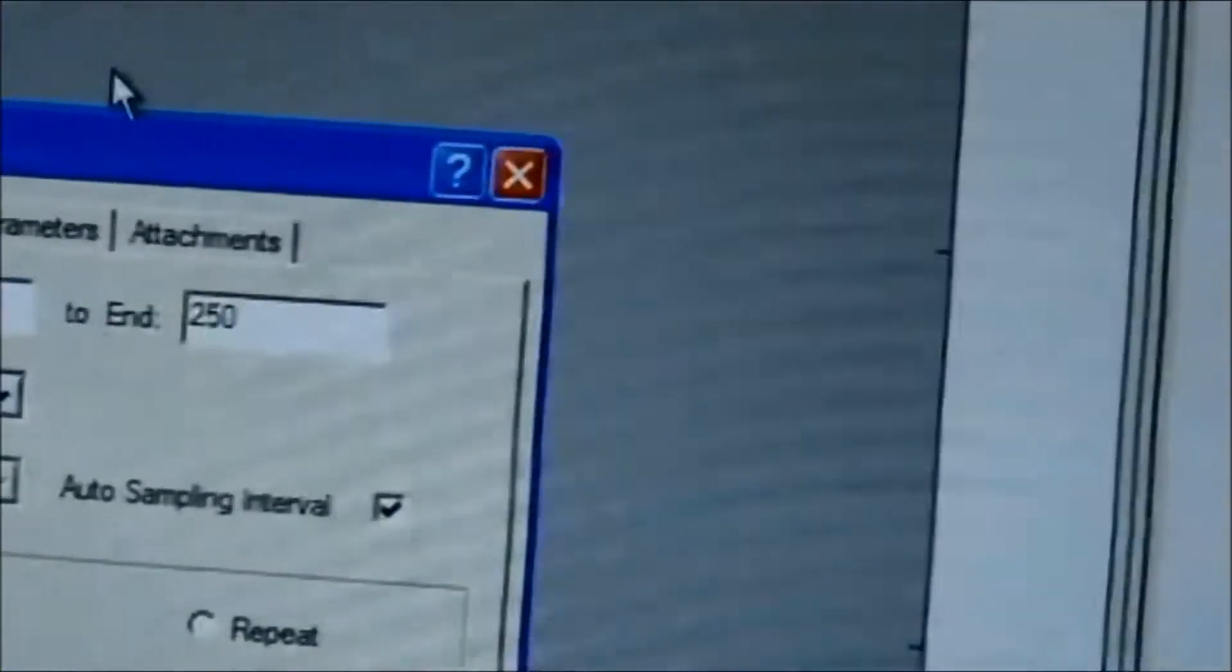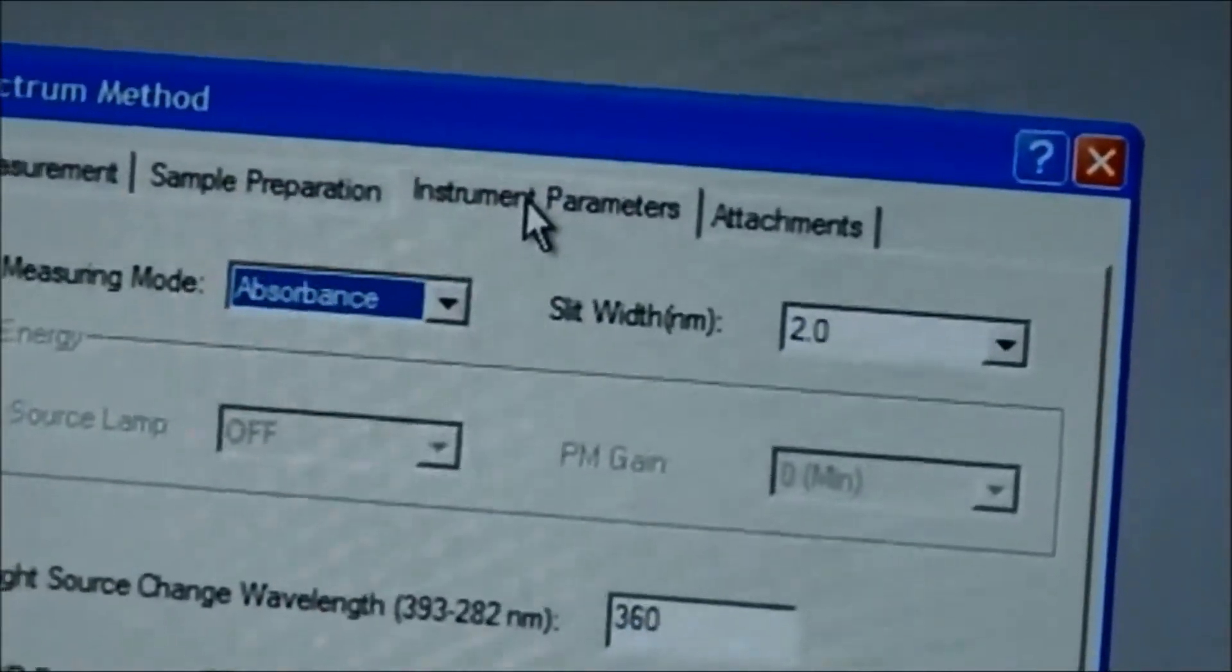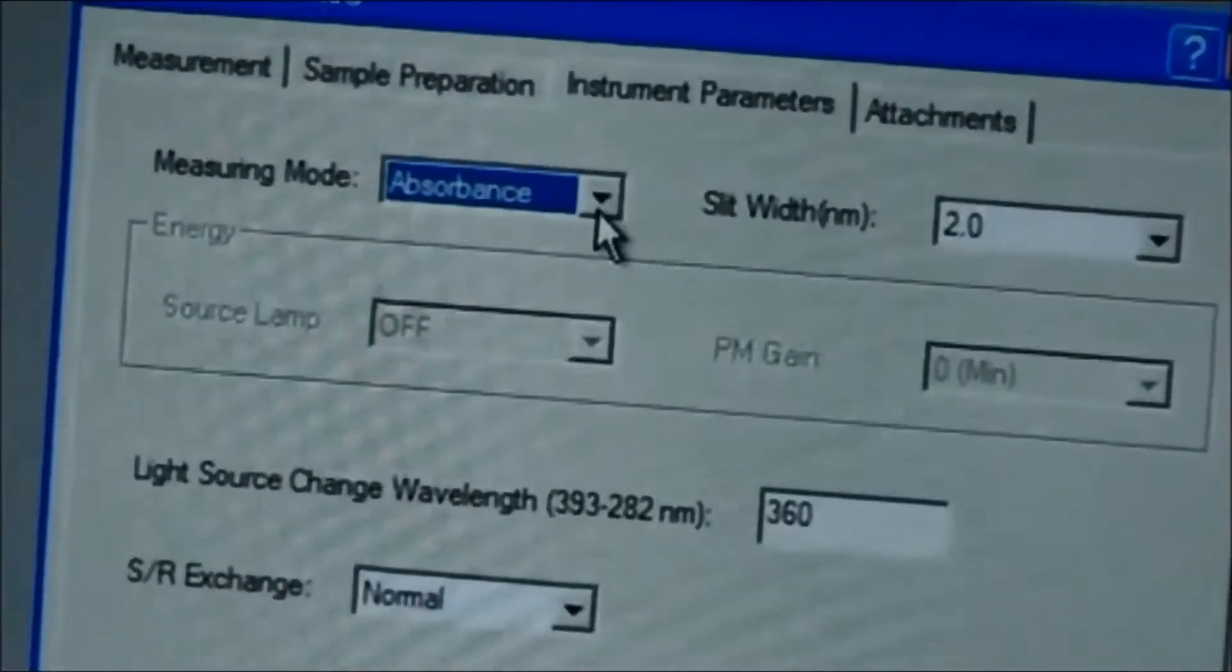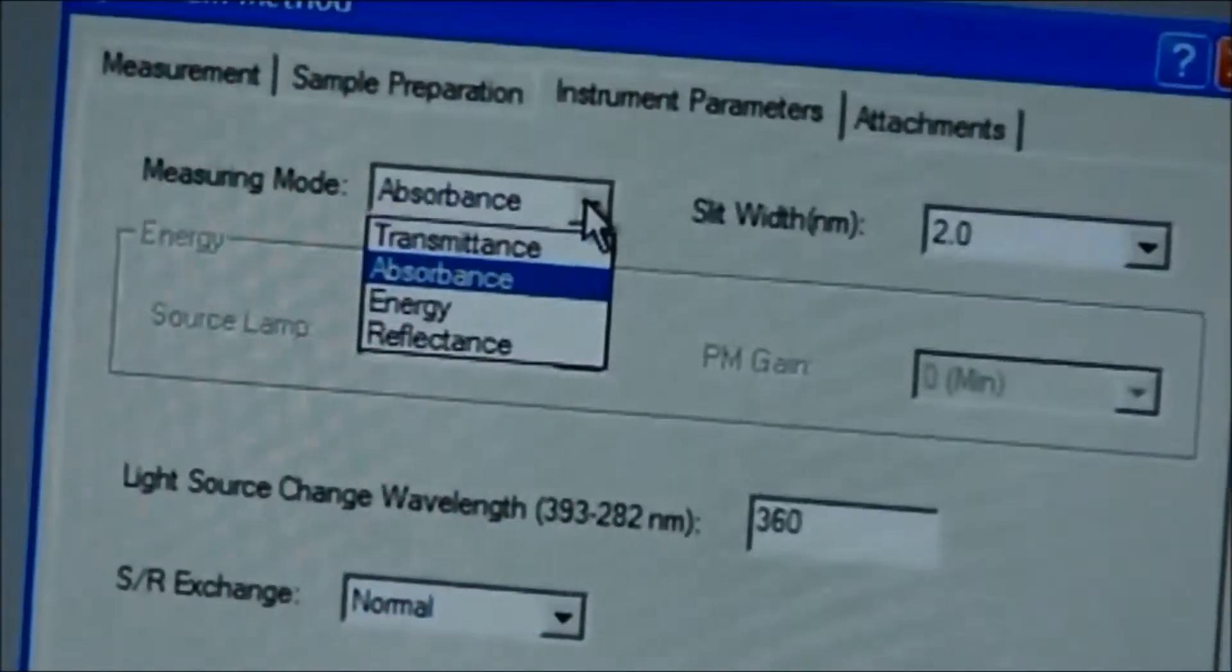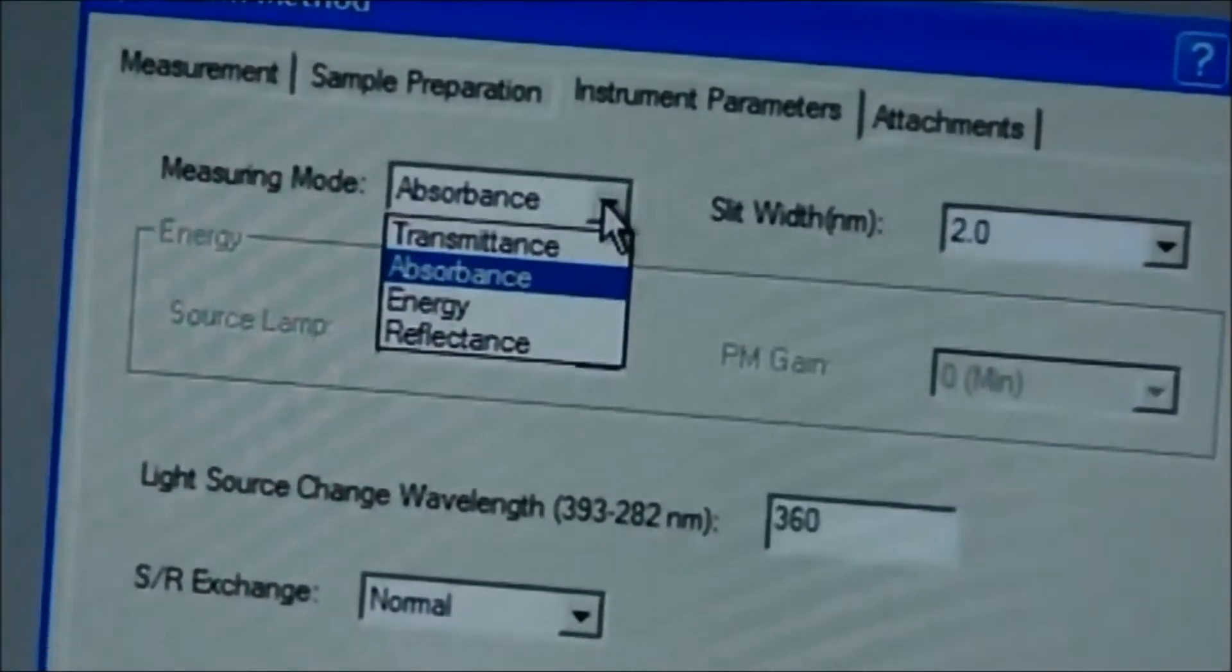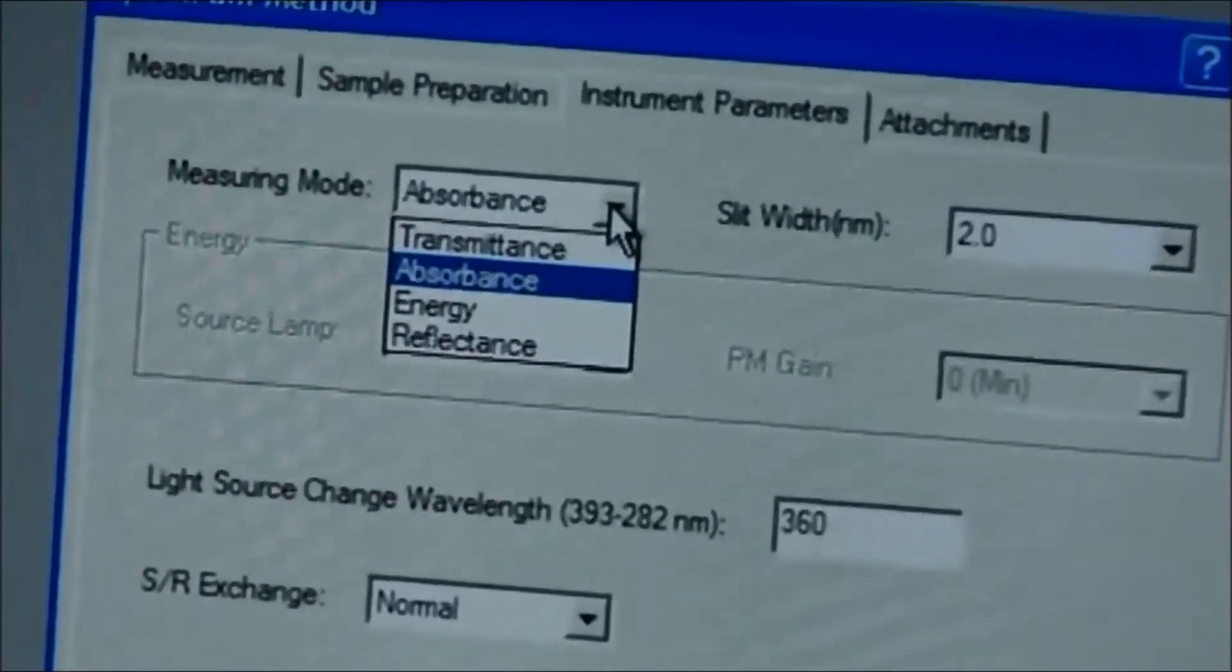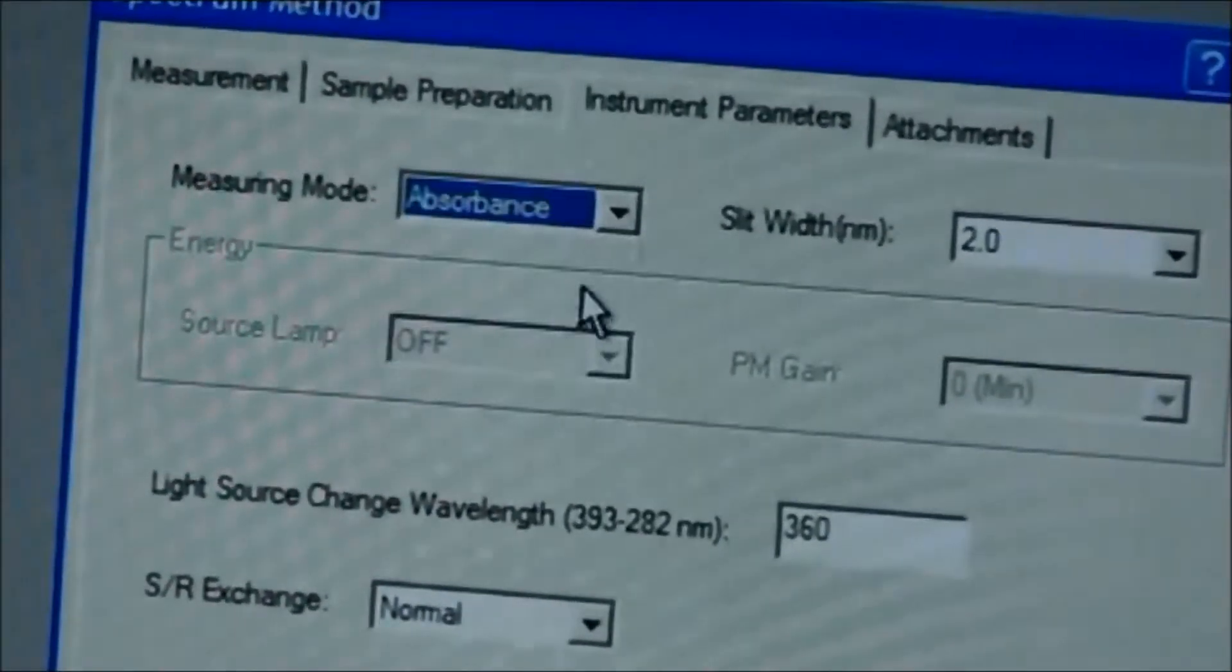After you've clicked that, you can go to your instrument parameters. That gives you your absorbance in the measuring mode. You have the transmittance, you have the energy, and then the reflectance. As I said, because we'll be dealing with absorbance, I would like us to click on the absorbance and use that absorbance.